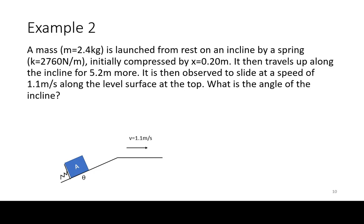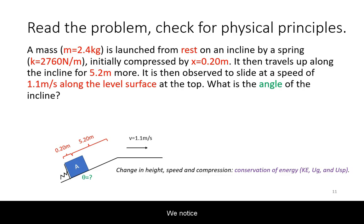In the second example, a mass is launched by a spring on an incline and then travels along a level surface. We notice that height, speed, and compression are changing, which implies using conservation of energy. We will read the problem in detail for the variables relevant to kinetic energy, gravitational potential energy, and spring potential energy. We will especially highlight what is being asked for.